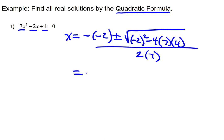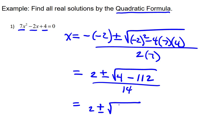Now we'll just simplify. This becomes 2 ± √(4 - 112), all over 14. All right, we'll keep this simplifying. This becomes 2 ± √(-108), all over 14.